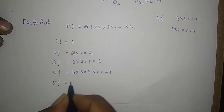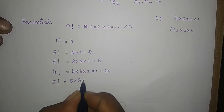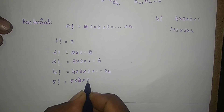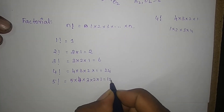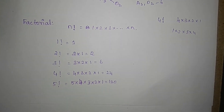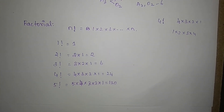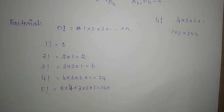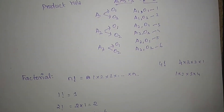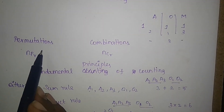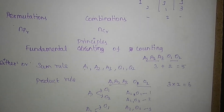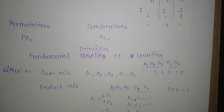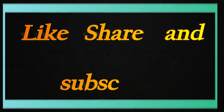5 factorial equals 5 into 4 into 3 into 2 into 1 equals 120. And this is the first exercise introduction. Next, permutations and combinations will follow. Thank you.